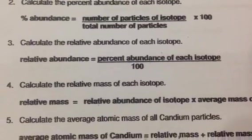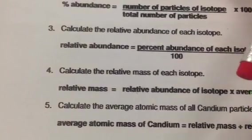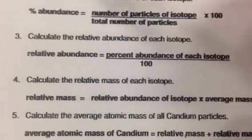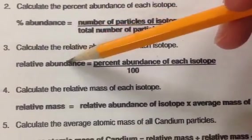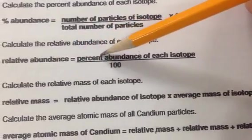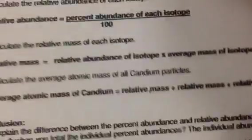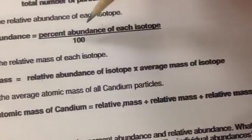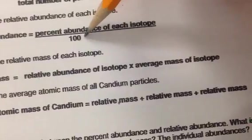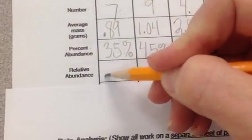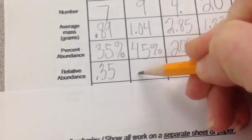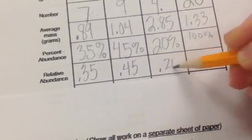The next thing that we're going to be doing is relative abundance. So relative abundance is the percent abundance, which we just now did that, of each isotope divided by 100. So basically you can just move that decimal point over to the left two spots. So 0.35, since we're dividing by 100. If you'll remember, we just multiplied by 100.